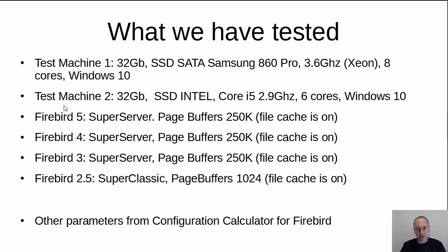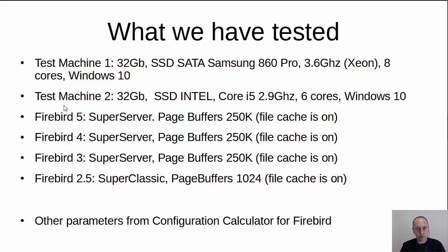Why did we test SuperClassic? Since this test is single-threaded, we could potentially test SuperServer and be more or less aligned in terms of architecture. But practically, people are using SuperClassic or Classic on the 2.5 version because SuperServer in 2.5 does not have the ability to use configurations with many cores. So we decided to compare what is practically being used by the majority of customers.